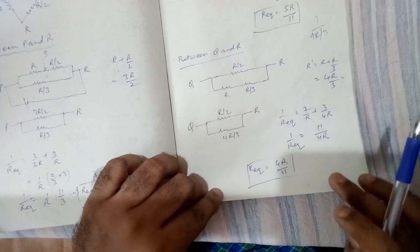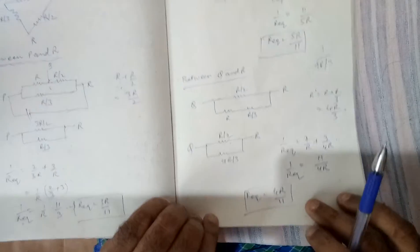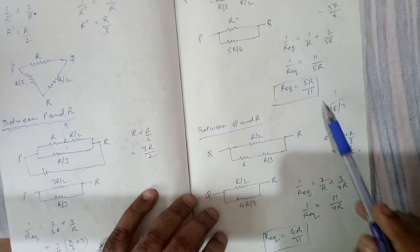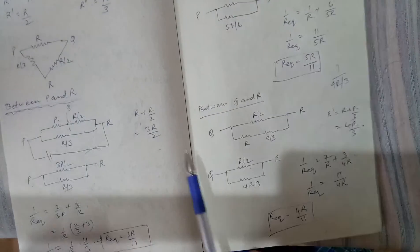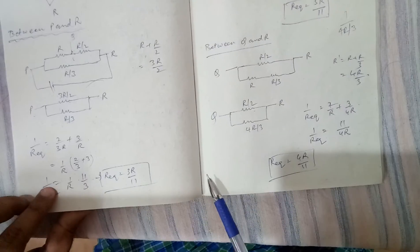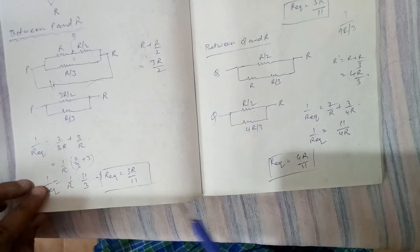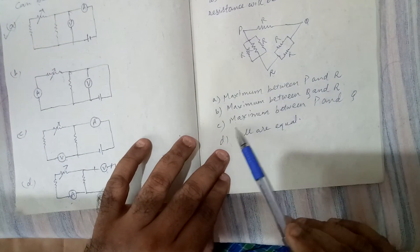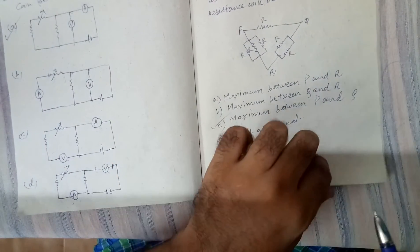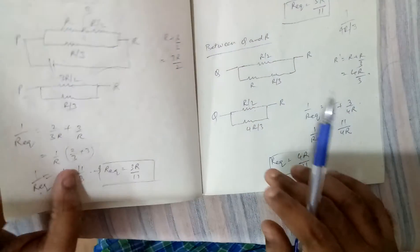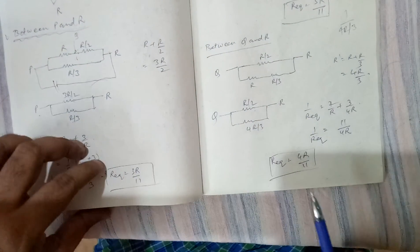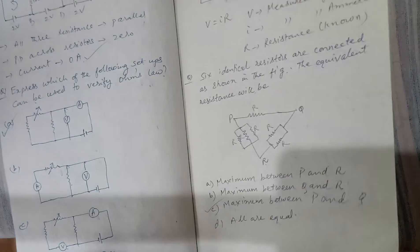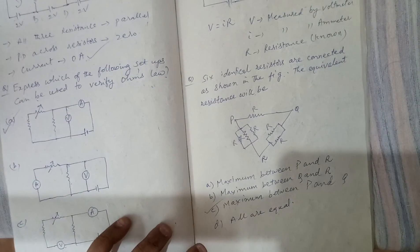Comparing all three: between Q and R we get four R by eleven, between P and Q we get five R by eleven, and between P and R we get three R by eleven. So option C is the correct answer — between P and Q we get the maximum value. This is the approach to this type of numerical.